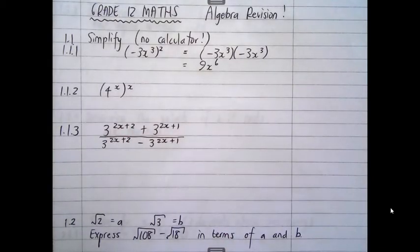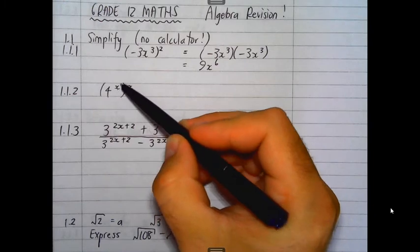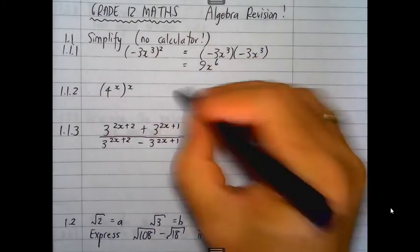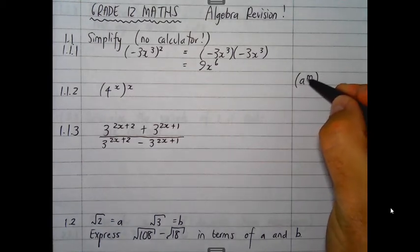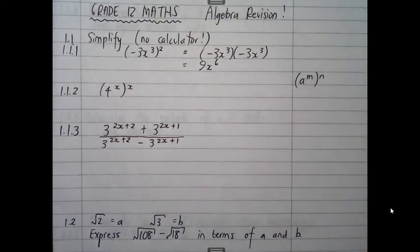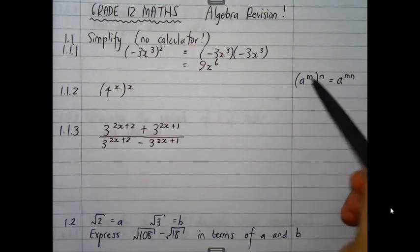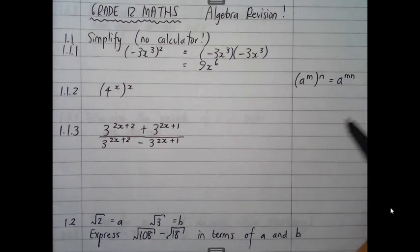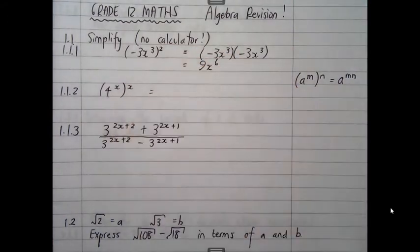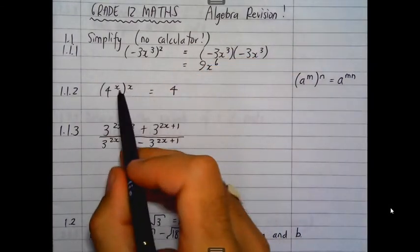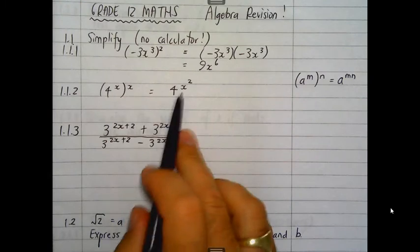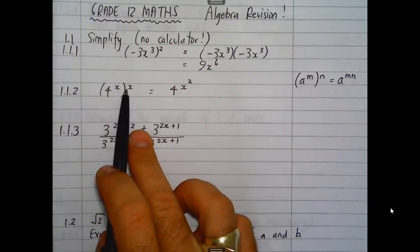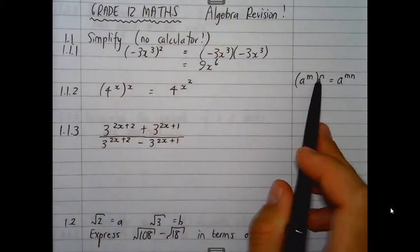In question 1.1.2, they give you 4 to the power x, all to the power x. Recall the exponential rule: a to the power m, all to the power n, simplifies to a to the power m·n — the exponents get multiplied together. Applying that rule here, we get 4 to the power of x squared. The x and the x multiply together to give x squared, just like m times n gave us mn.